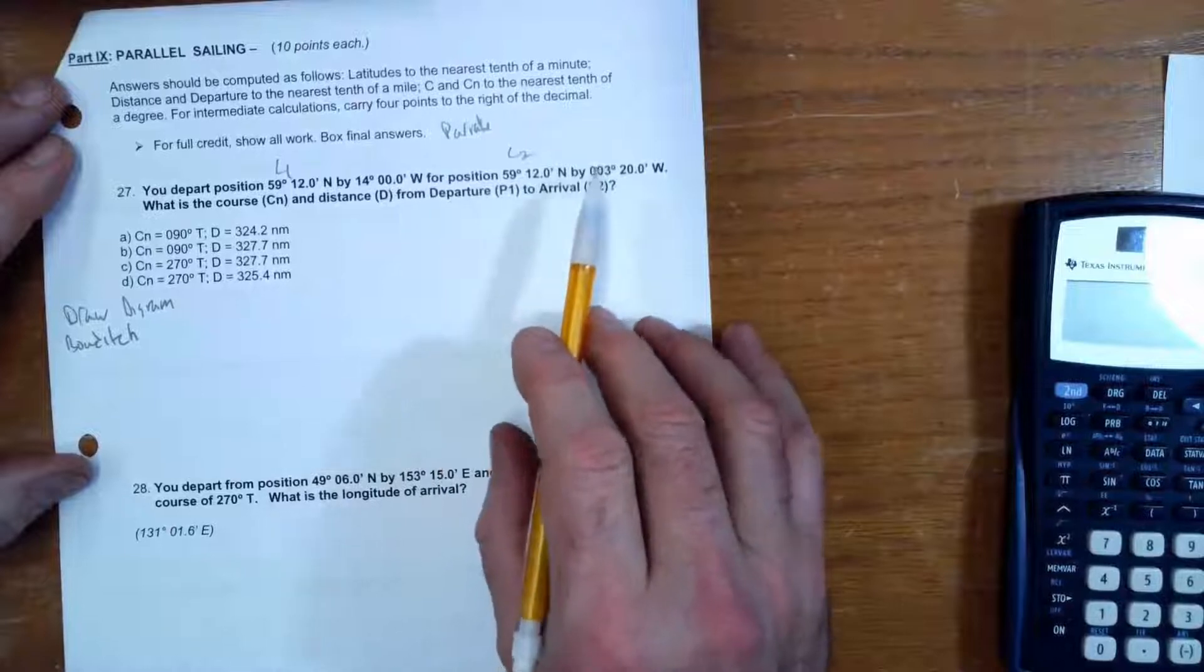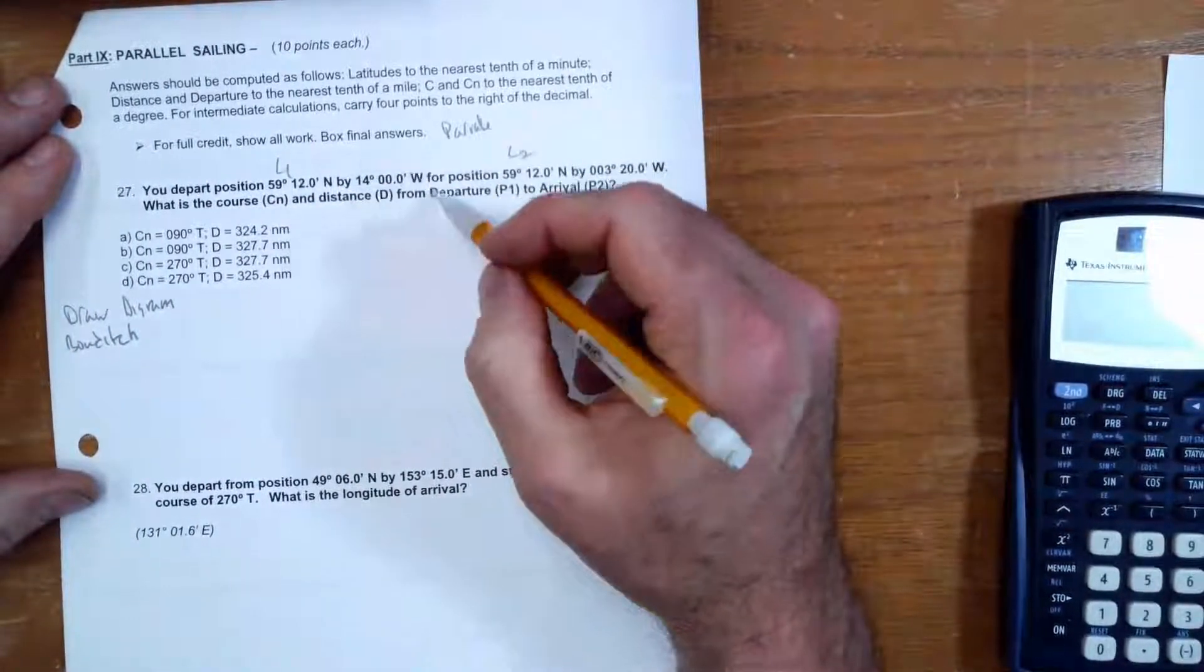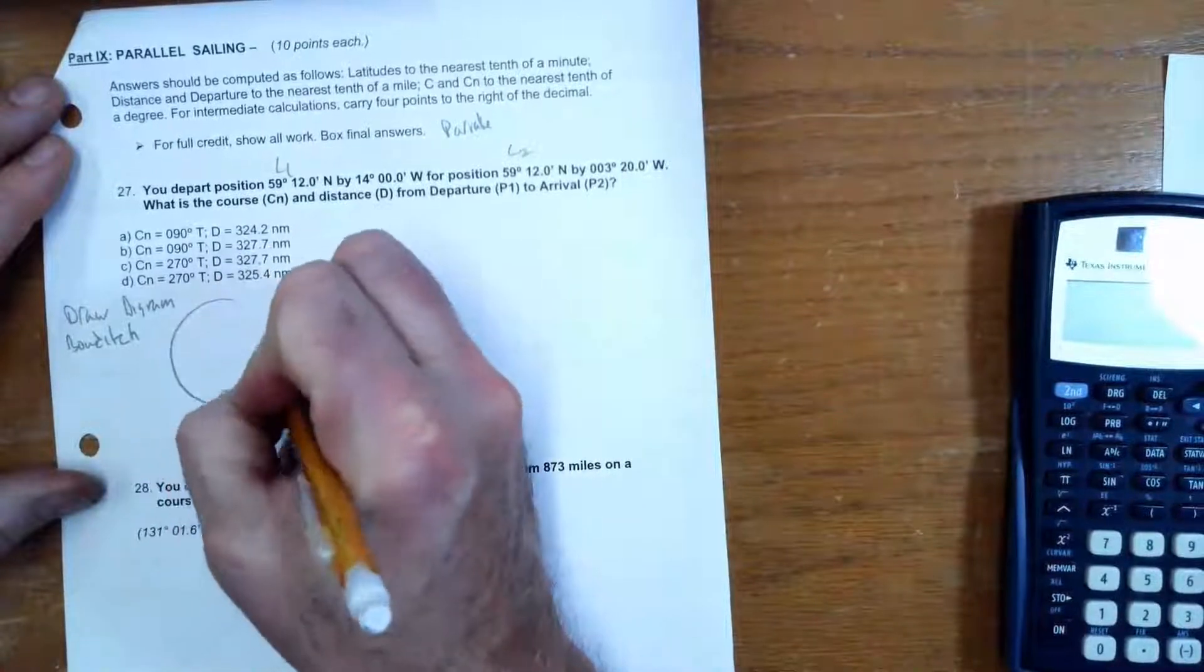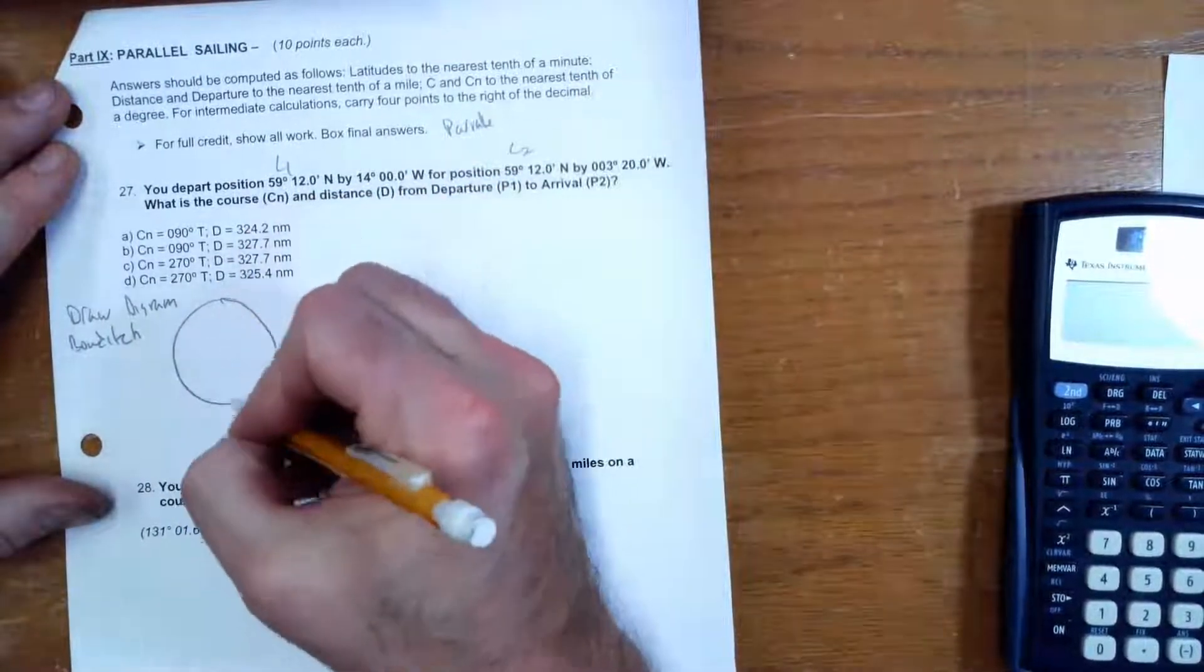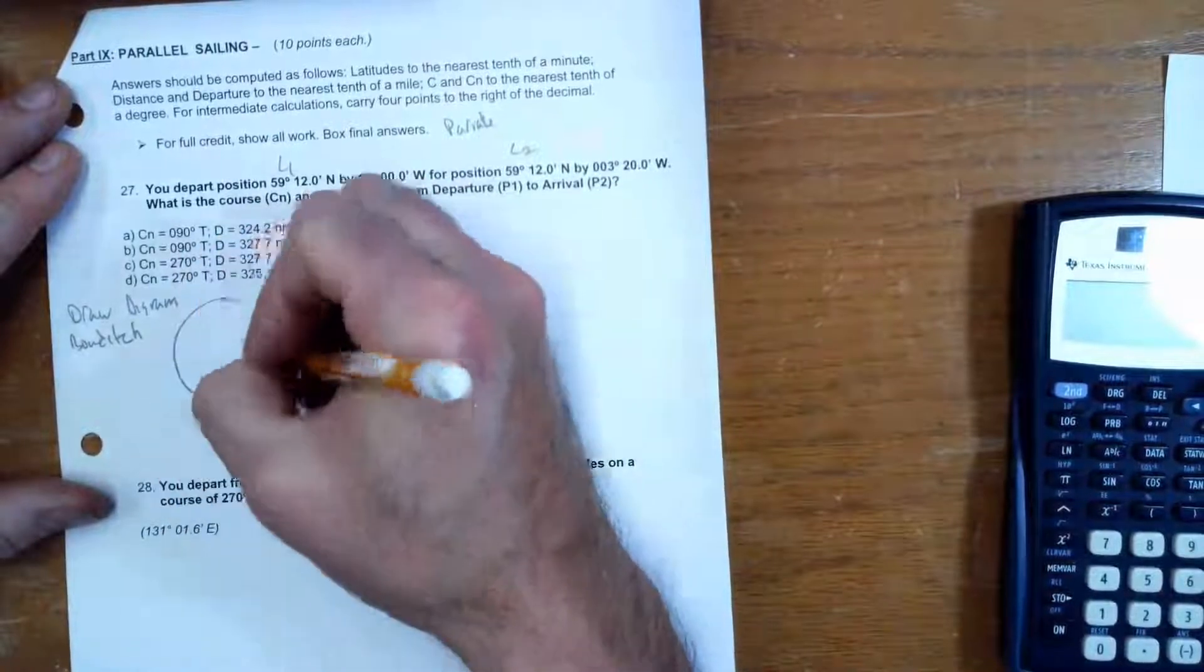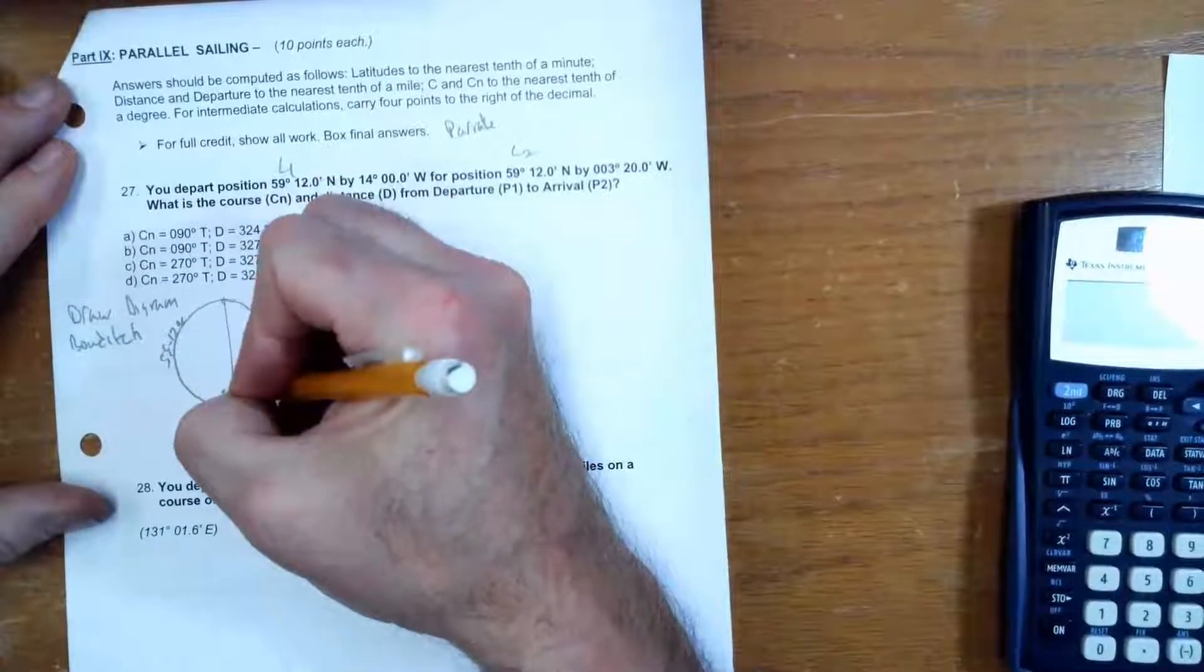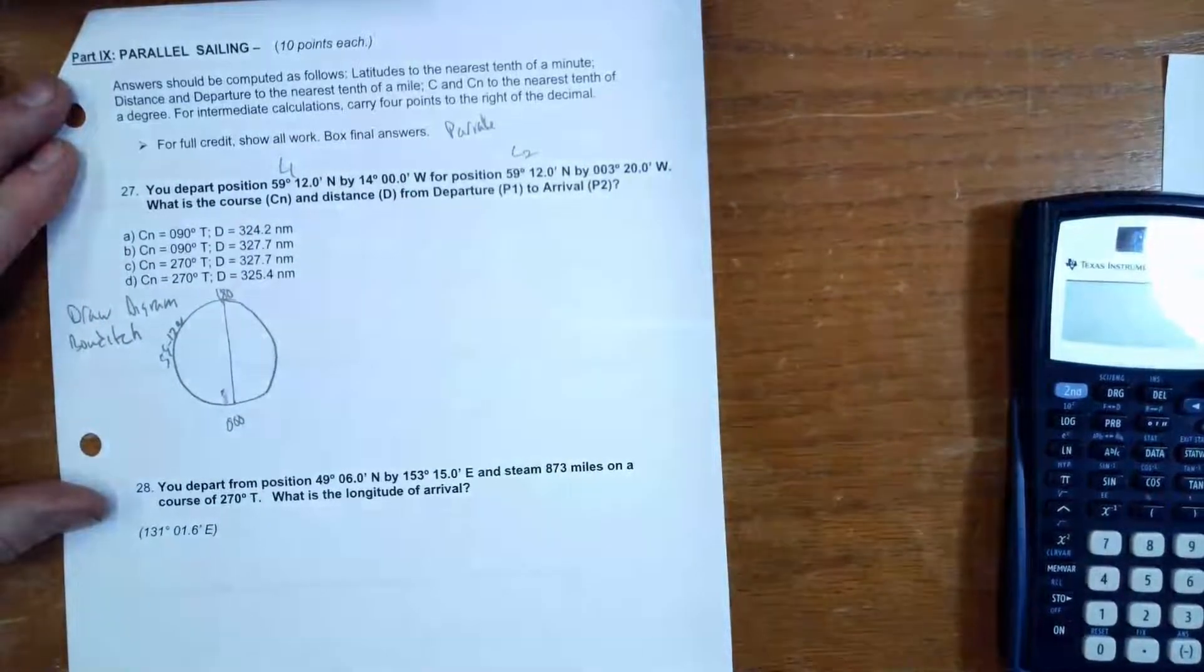So strange but true for a parallel sailing problem. Since my latitude doesn't change, I'm actually going to draw a longitude diagram. I'm looking down at the top of the world, and this right here is the small circle of 59°12'. So this whole circle here is the latitude of 59°12'. And 59°12' crosses the Greenwich Meridian and crosses the dateline.